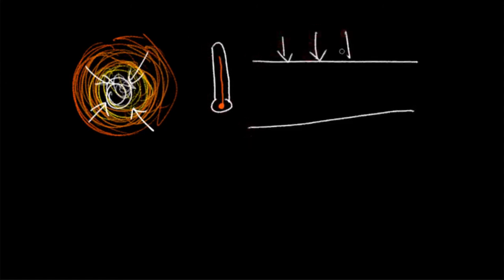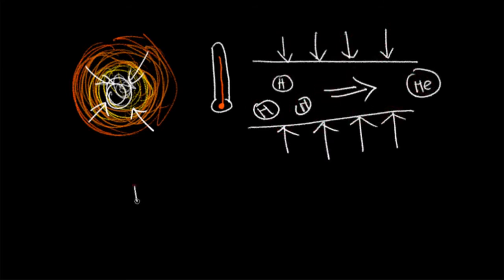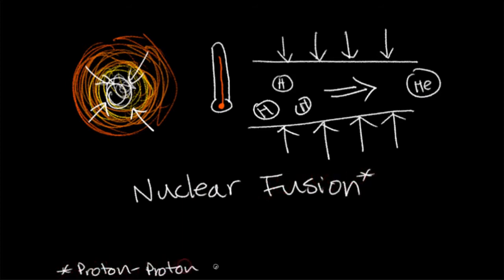Meanwhile, as the protostar contracts due to gravity, its temperature and pressure increases until a point where hydrogen can start fusing to become helium. This process is known as nuclear fusion, which releases large amounts of heat and light. The protostar has evolved into the sun.